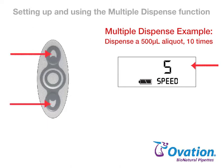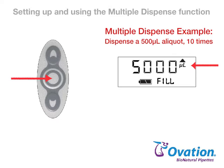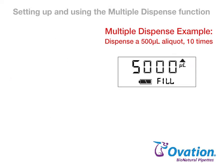One is the slowest, five is the fastest. Press and release the center button to lock in the speed setting and exit setup.